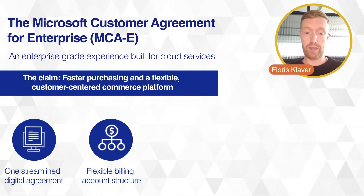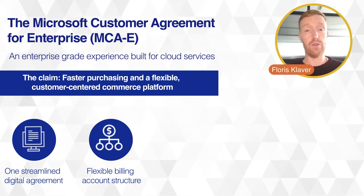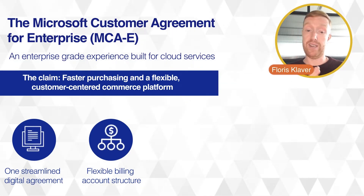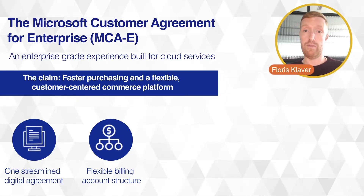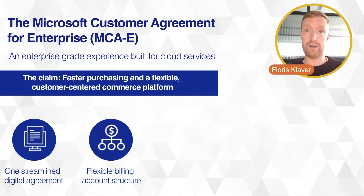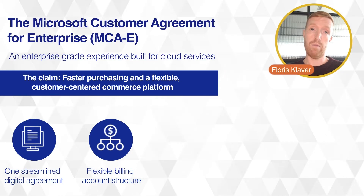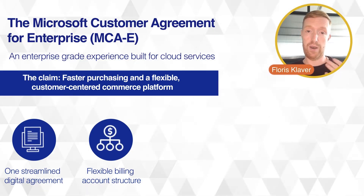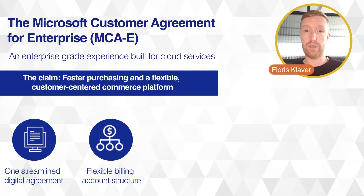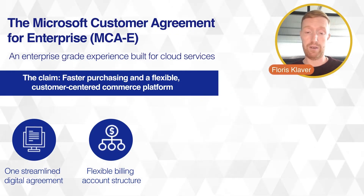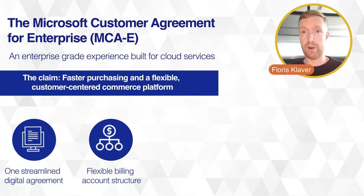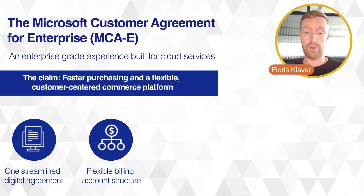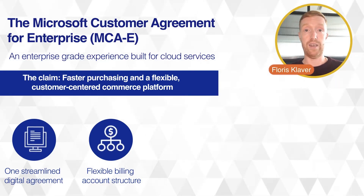The flexible billing structure is something I have very high hopes for, because in the Enterprise Agreement the billing structure is very inflexible. You have one contract, you can link one tenant to it, and you get one bill for all your services. With the MCA, the premise is that you can split it out however you want — per department, per tenant — and have it invoiced to your liking.